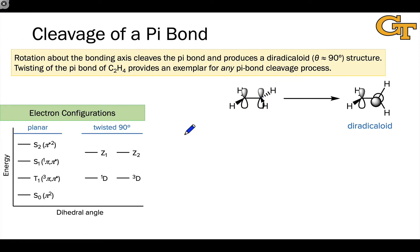Let's now think through the possible electron configurations. For planar ethylene we have the classic set of s0, t1, s1, s2 with varying types of excitation of the pi electrons. So s0 is a pi 2 state, t1 is a triplet pi pi star state, s1 is a singlet pi pi star state, and s2 is the state in which we've taken both pi electrons and excited them into the pi star, pi anti-bonding orbital.